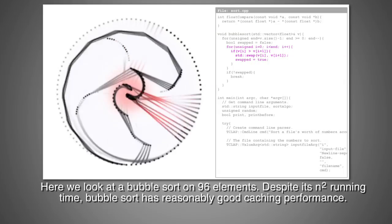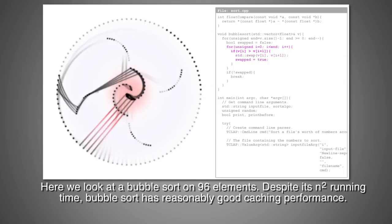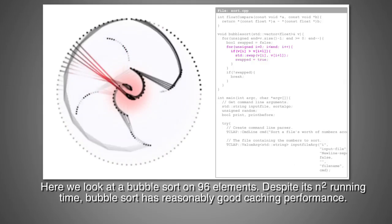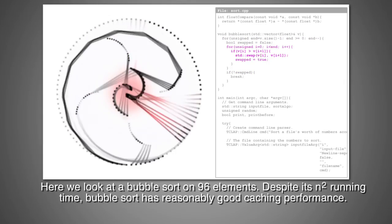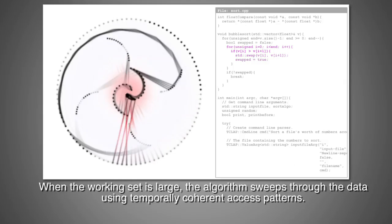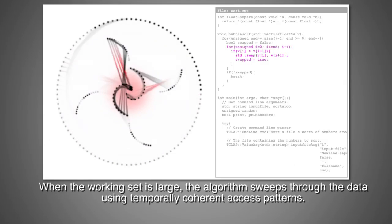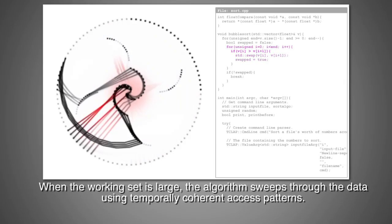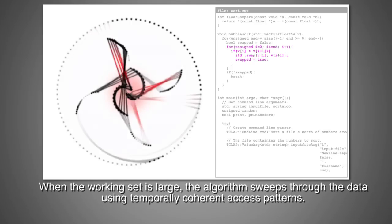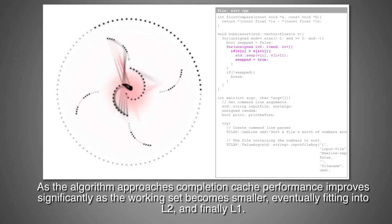Here we look at a bubble sort on 96 elements. Despite its n-squared running time, bubble sort has reasonably good caching performance. When the working set is large, the algorithm sweeps through the data using temporally coherent access patterns. As the algorithm approaches completion, cache performance improves significantly as the working set becomes smaller, eventually fitting into L2 and finally L1.